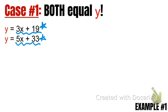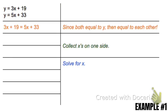then these two must be equal to each other, because they're both equal to y. So what we do is we set them equal to each other. 3x plus 19 equals 5x plus 33.